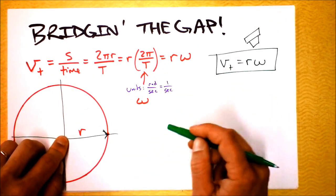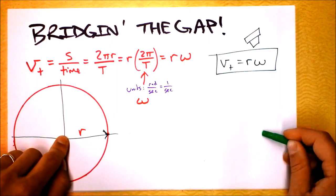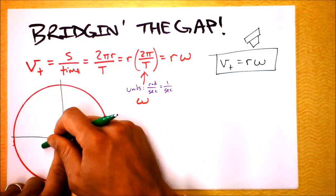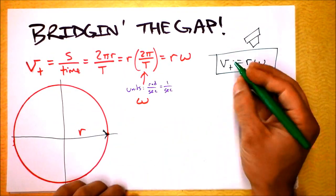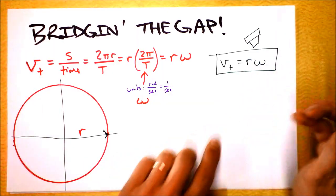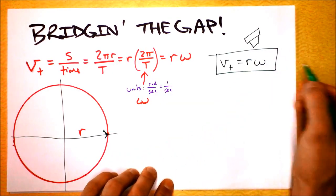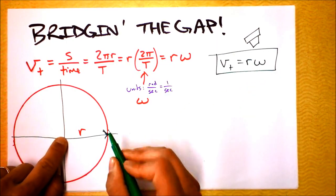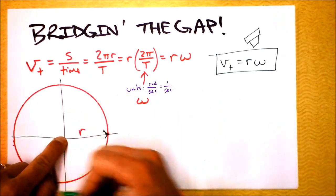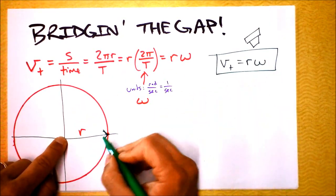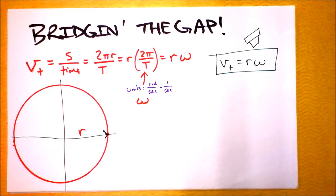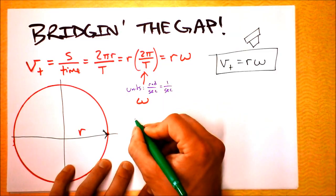For an angular velocity of one revolution per second, if the radius is large you're going really fast to get all the way around, and if the radius is small you won't need to go very fast at all. Tangential speed depends on radius that way. Similarly, if omega is large we're getting lots of revolutions per second and tangential speed is large; if omega is small, tangential speed is also small.